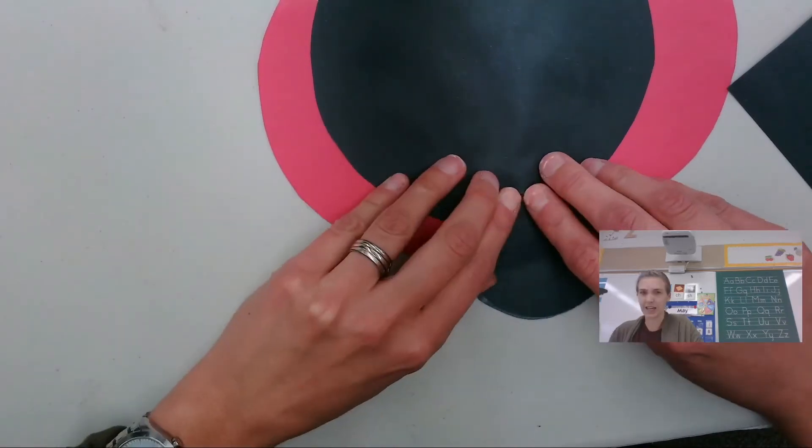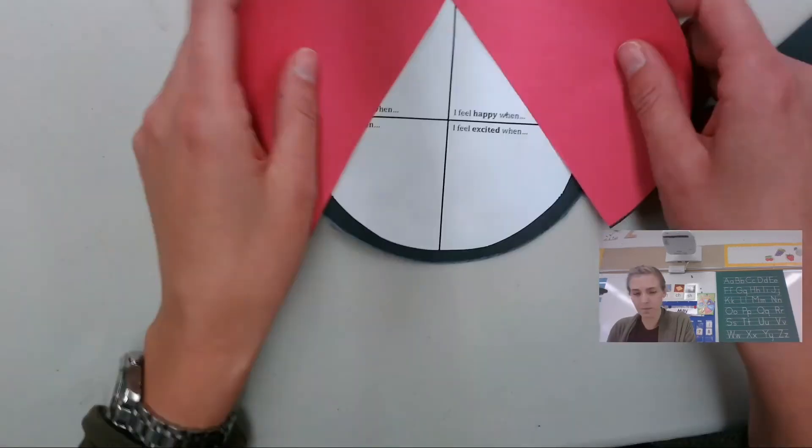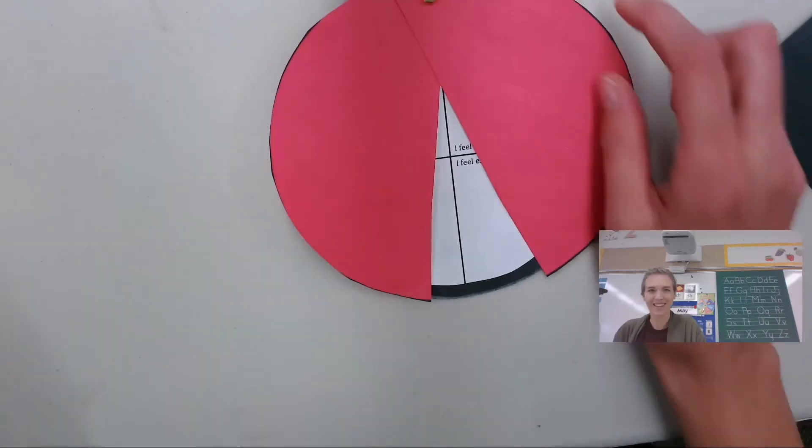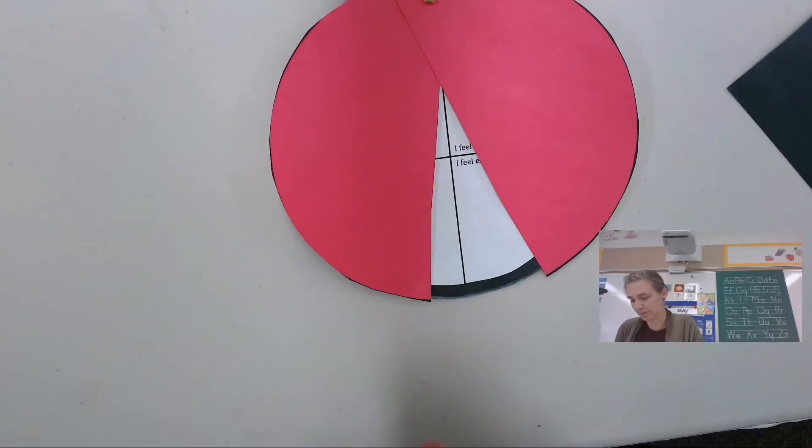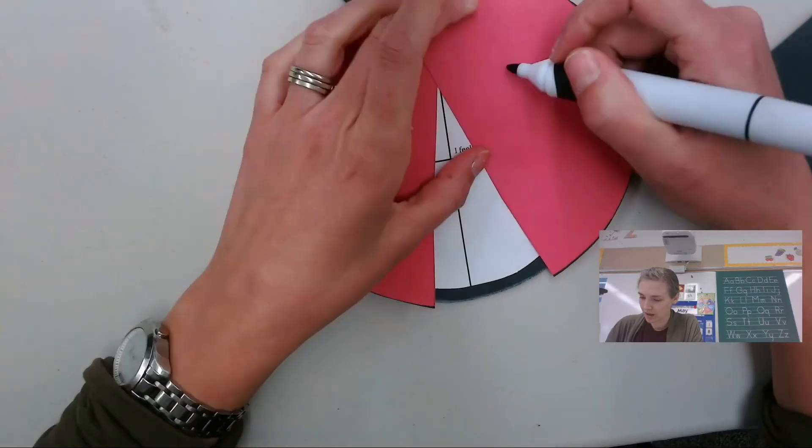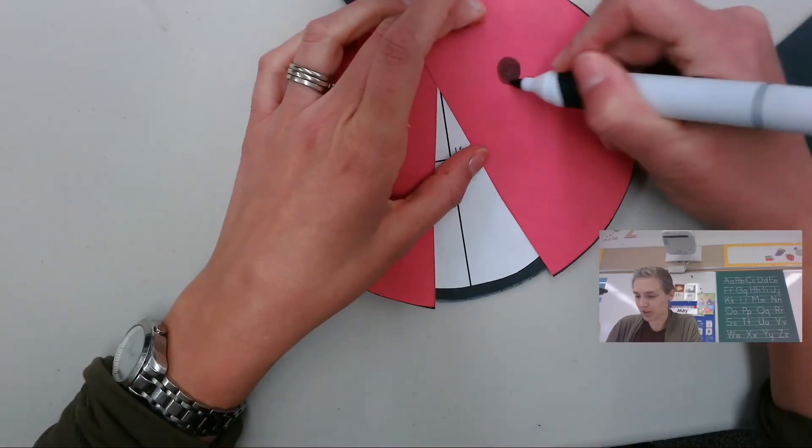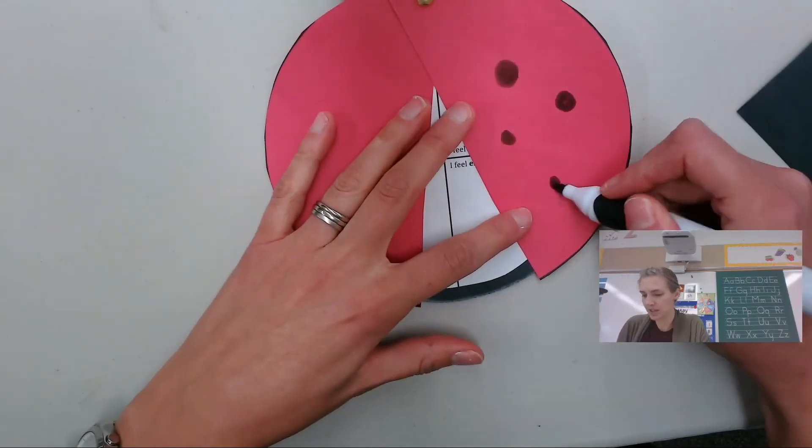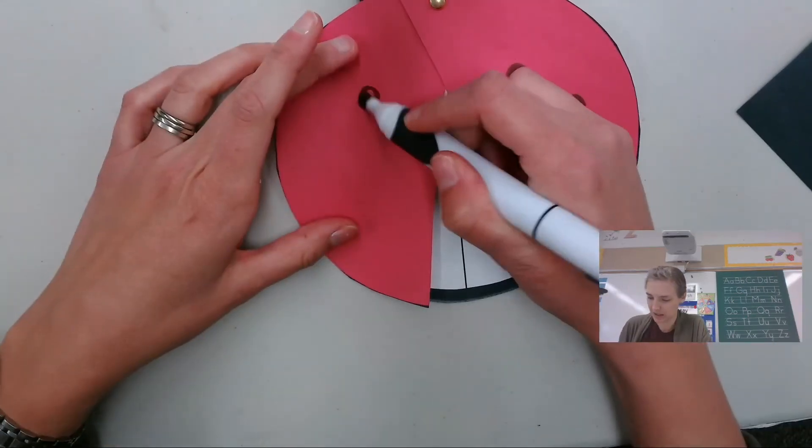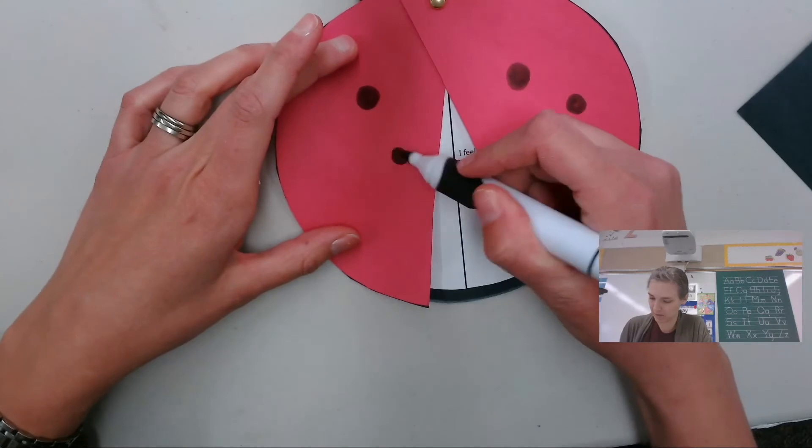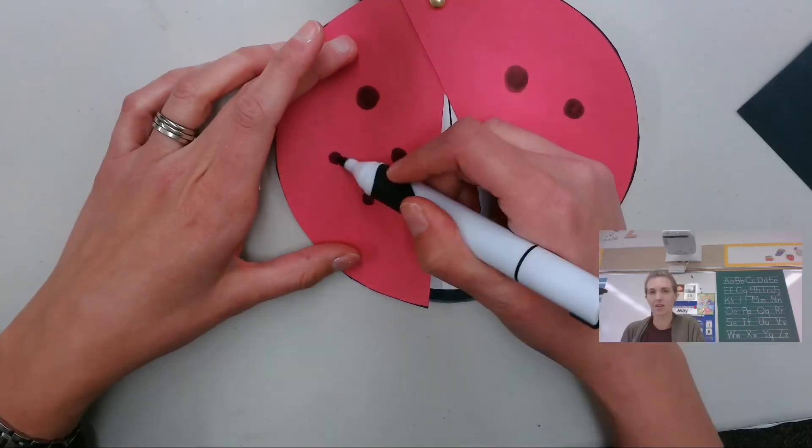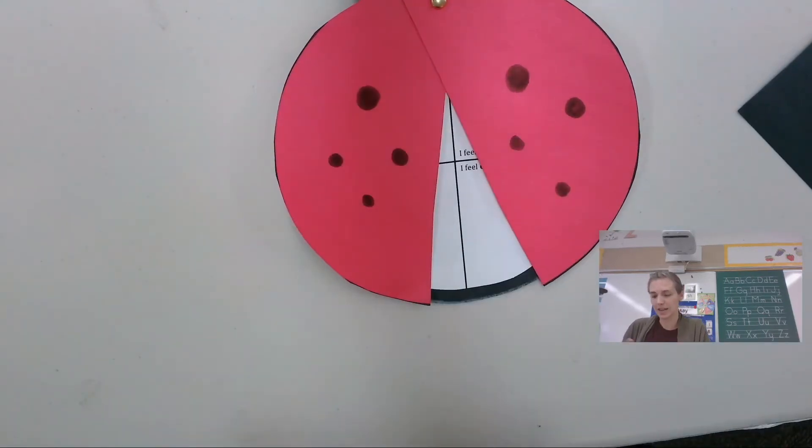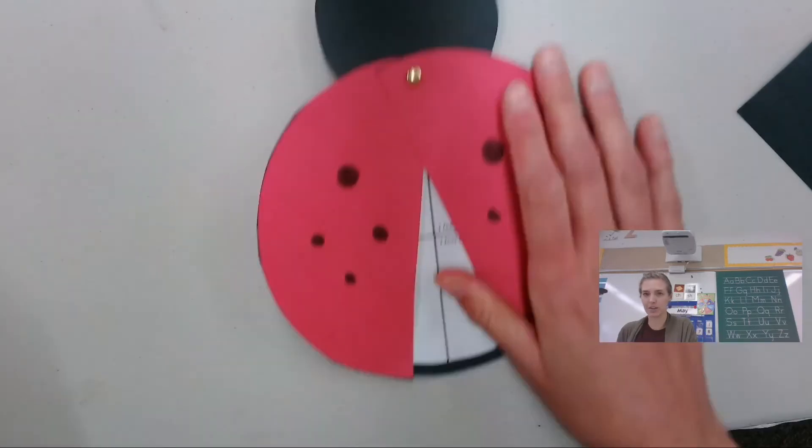All right, and there's your ladybug. Oh, we're missing something for our ladybug. We're missing its spots. So then just take a black marker or a black crayon and make some spots on it. There we go. And there is our ladybug craft.